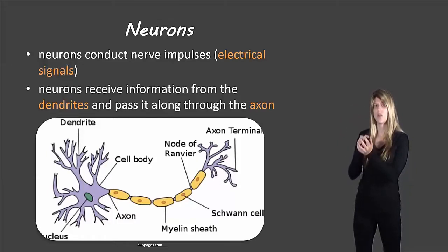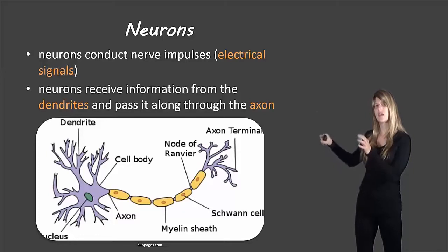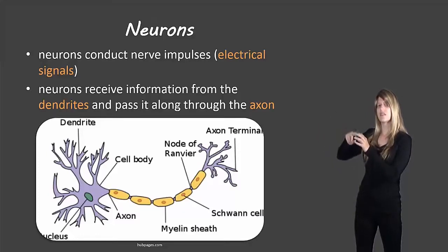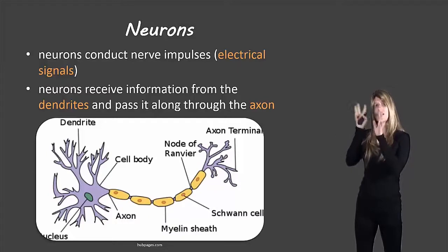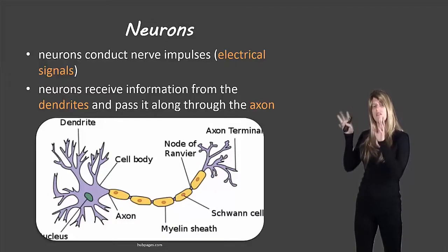And then there's one single long axon that goes away from the cell body, and at the end it has some projections so that it can interact with different cells.